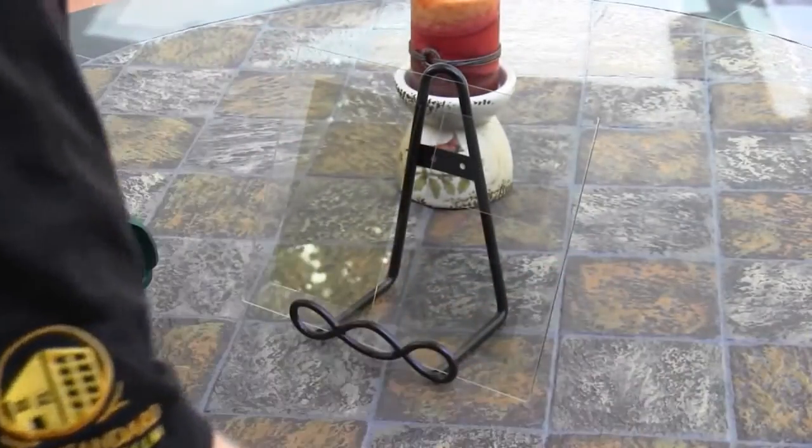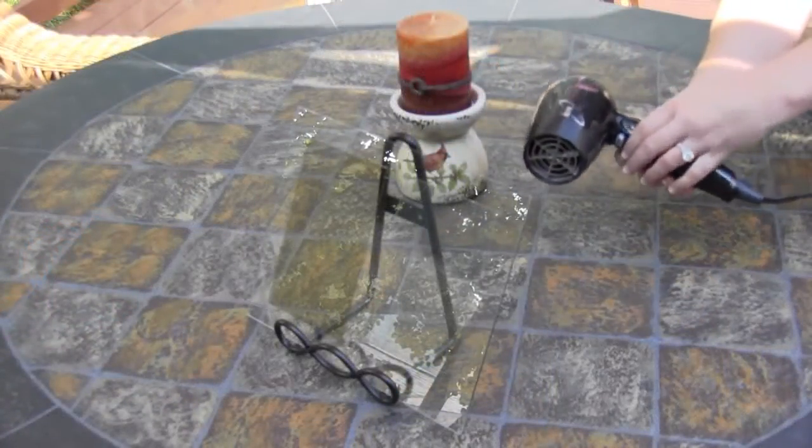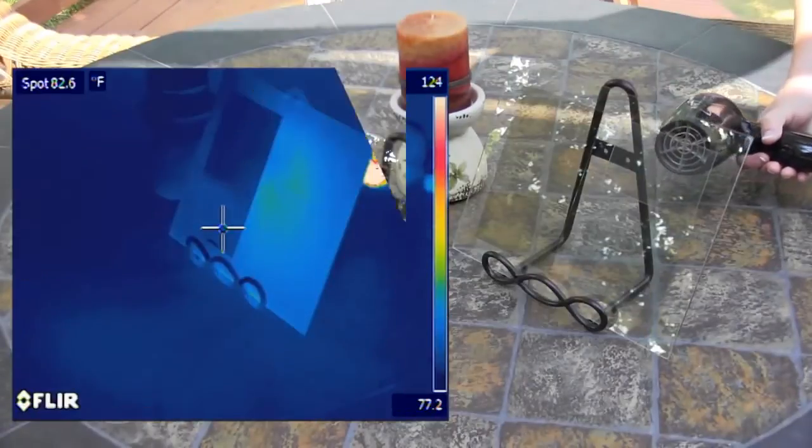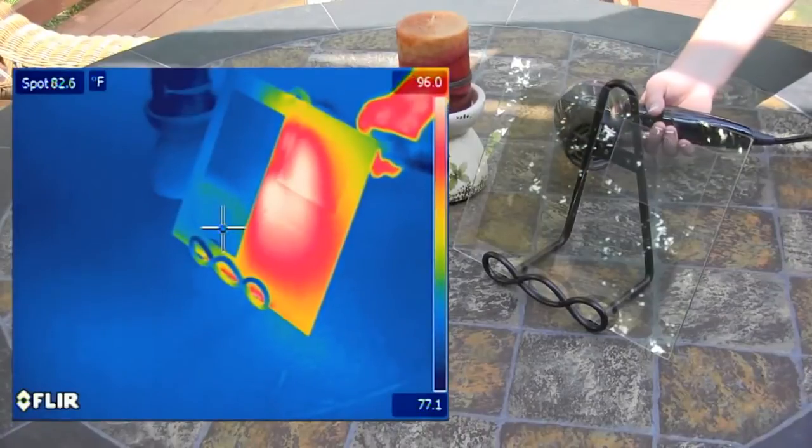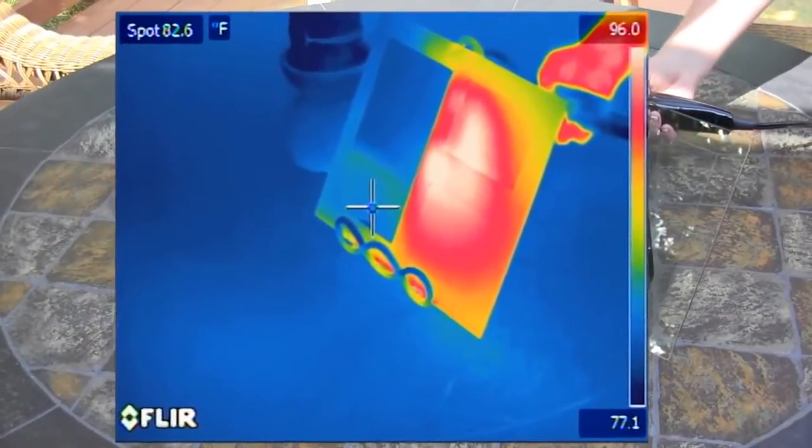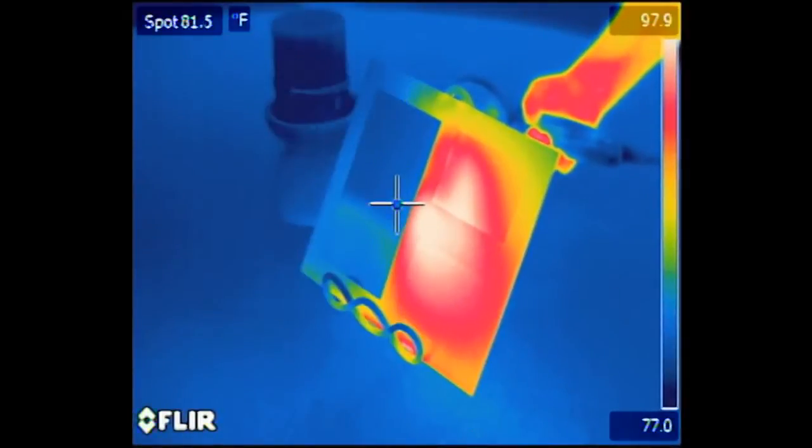To simulate the heat of summer, we'll use a blow dryer on the high setting, on the back side of the glass, to quickly warm the glass to well over 100 degrees Fahrenheit, or roughly 38 degrees Celsius. Watch, over the next 60 seconds, how the clear glass and the other filmed areas begin to glow orange and red